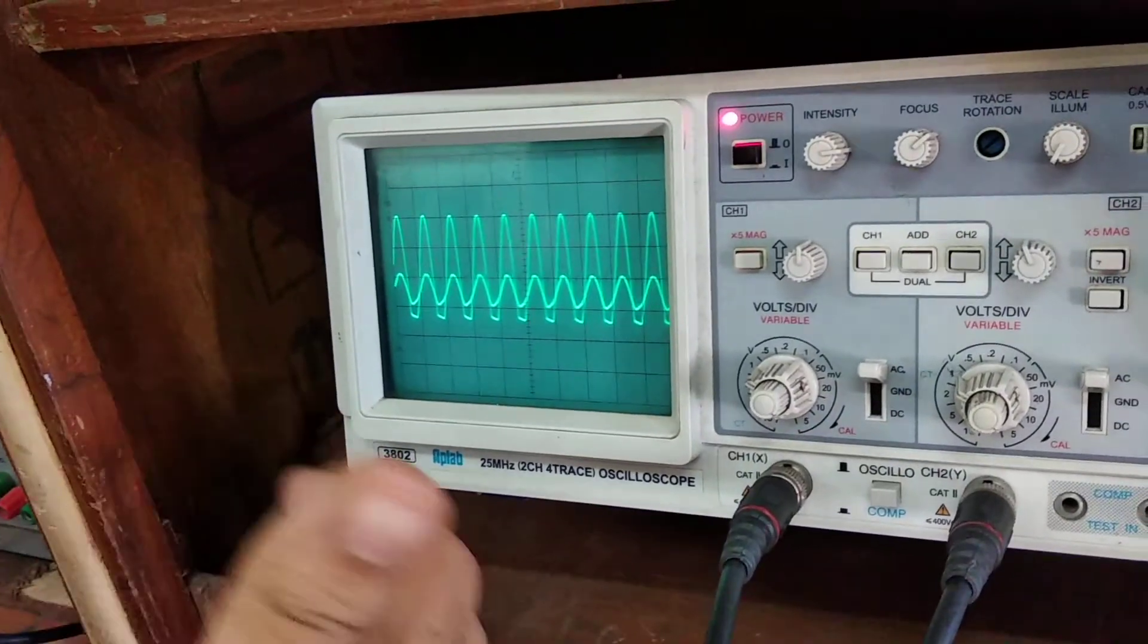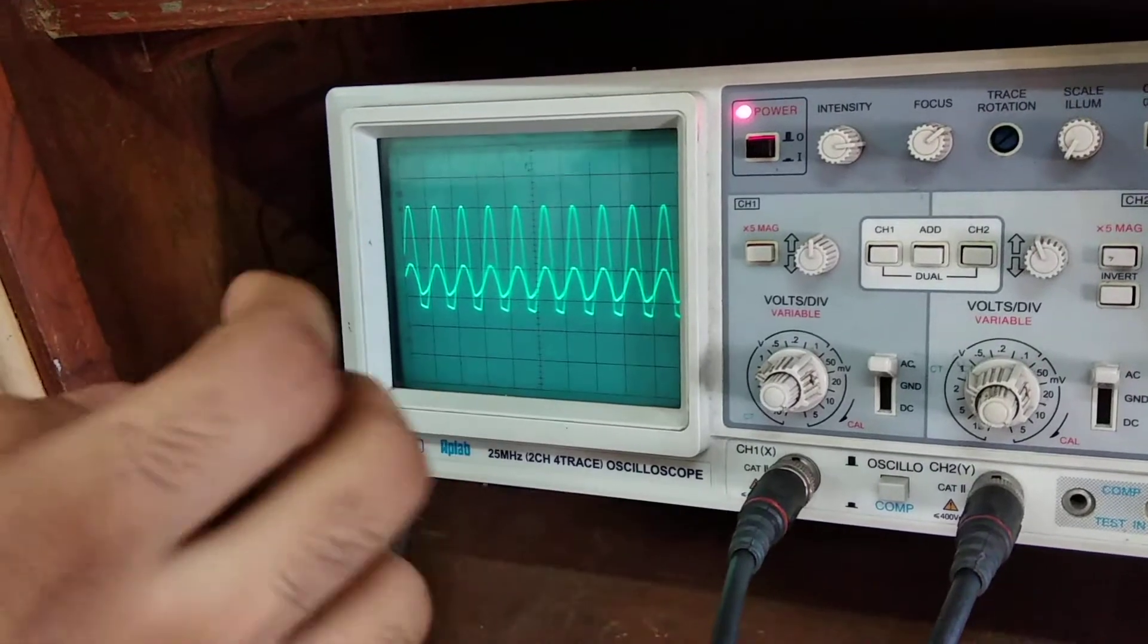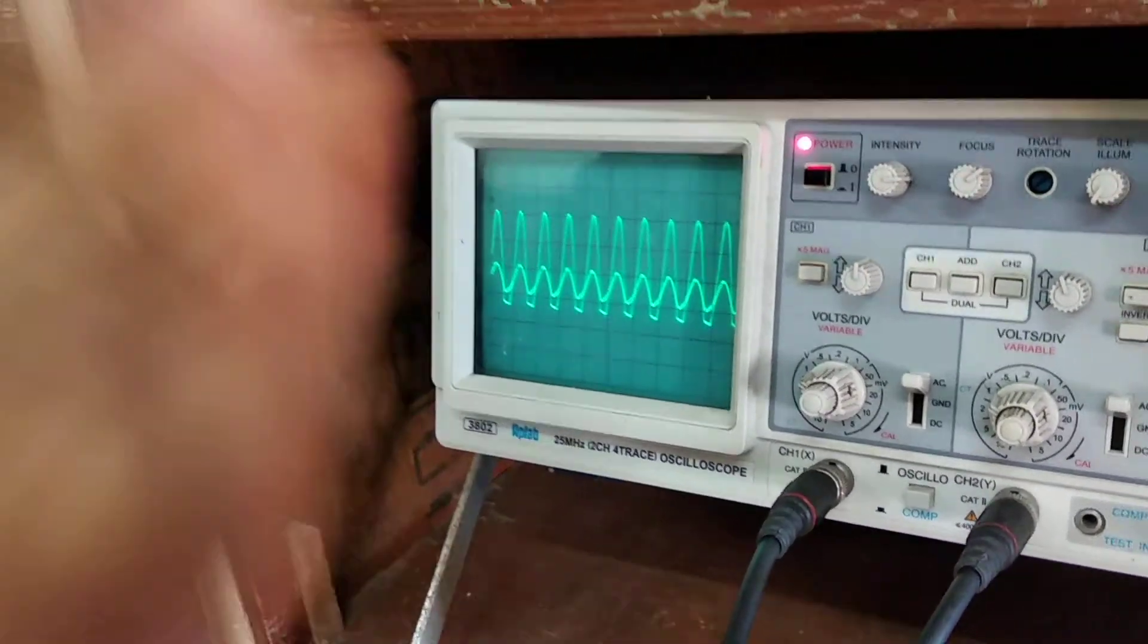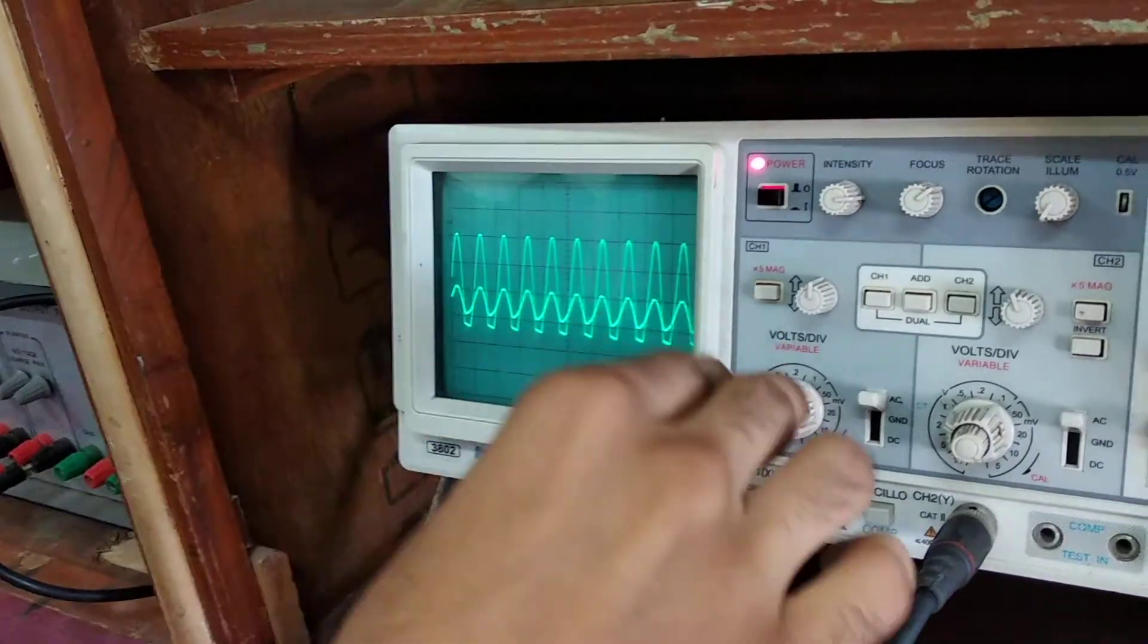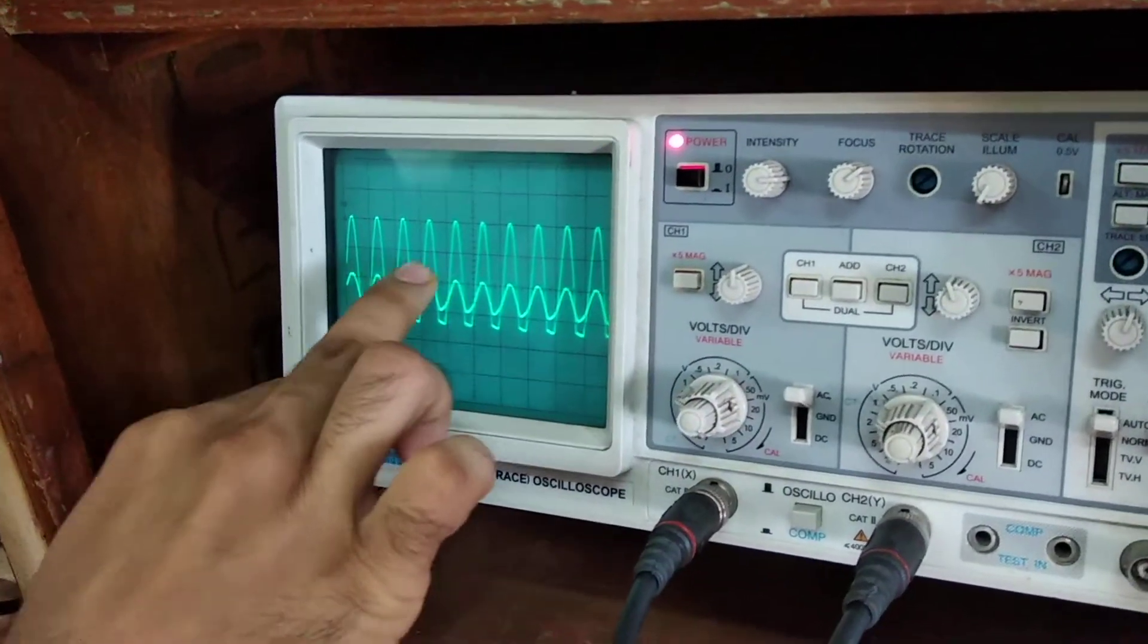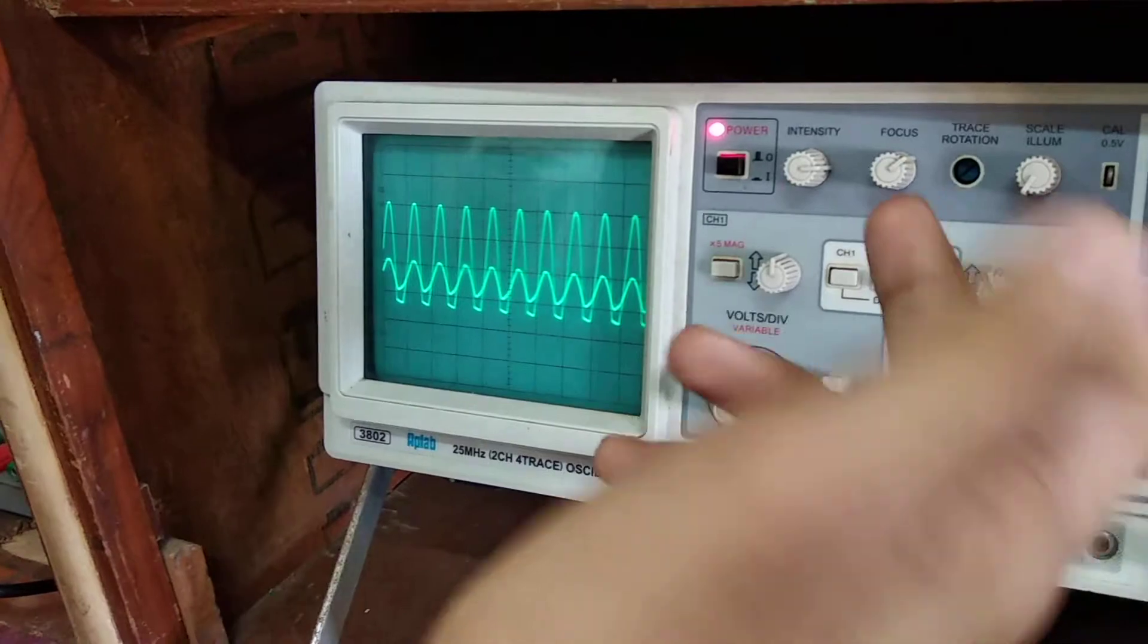So to calculate the gain what we do is just divide it. So VO upon VF, that is 3.4 divided by 1. So our gain is 3.4. Now to calculate frequency, the feedback and the output frequency of the signal is the same.